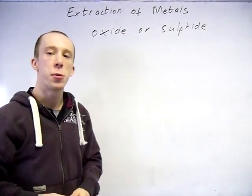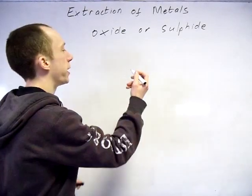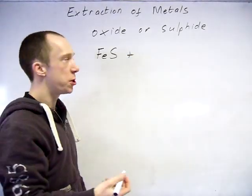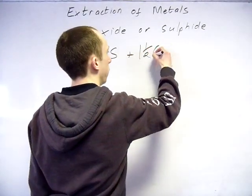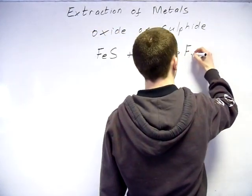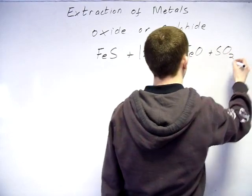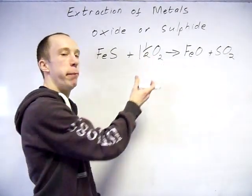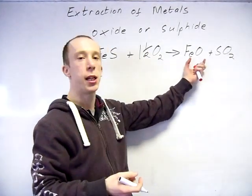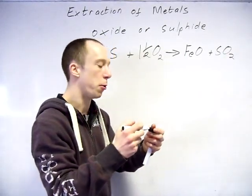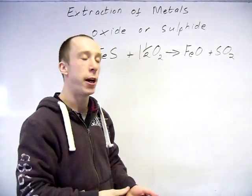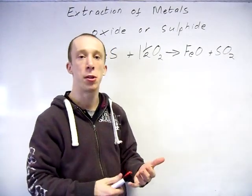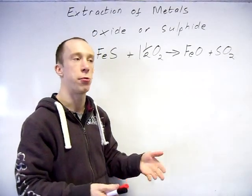Now the oxide ores are the ones we typically extract them from, so if you've got a sulfide ore, then what we can do is burn it. So this process is called roasting, not premiership footballer style, just actually burning it in oxygen and you get the metal oxide and sulfur dioxide given out. Obviously straight away environmental problem with this, you're releasing sulfur dioxide, if it gets into the atmosphere, reacts with oxygen and water, forms sulfuric acid, acid rain.